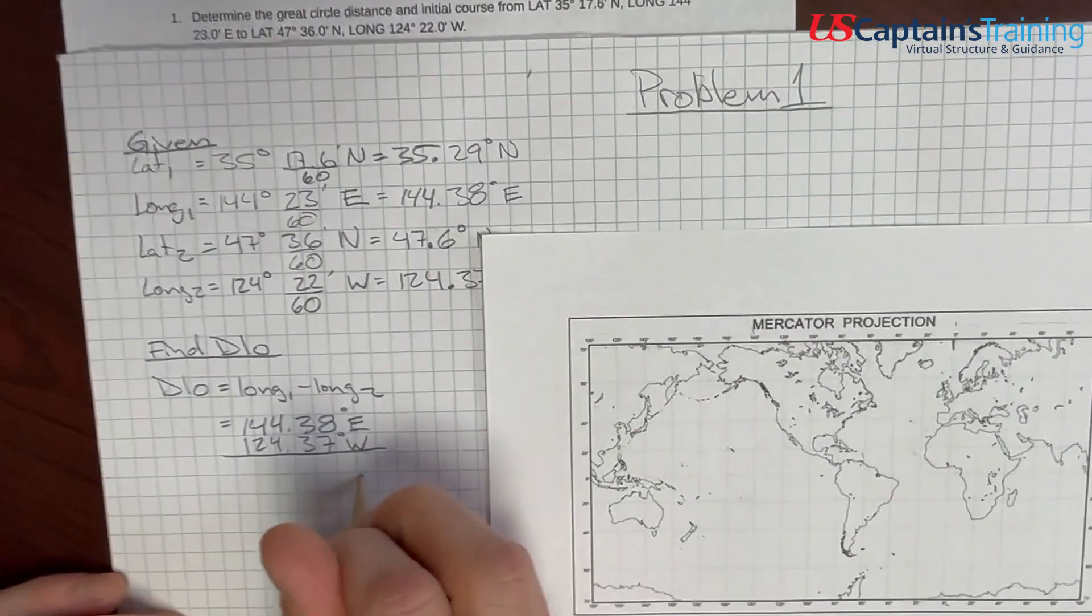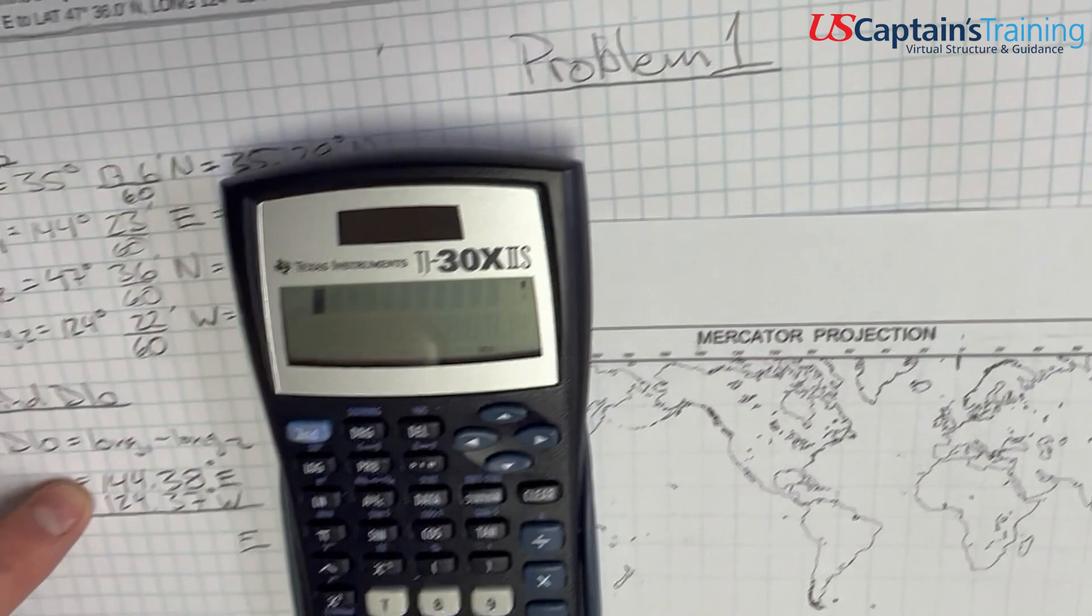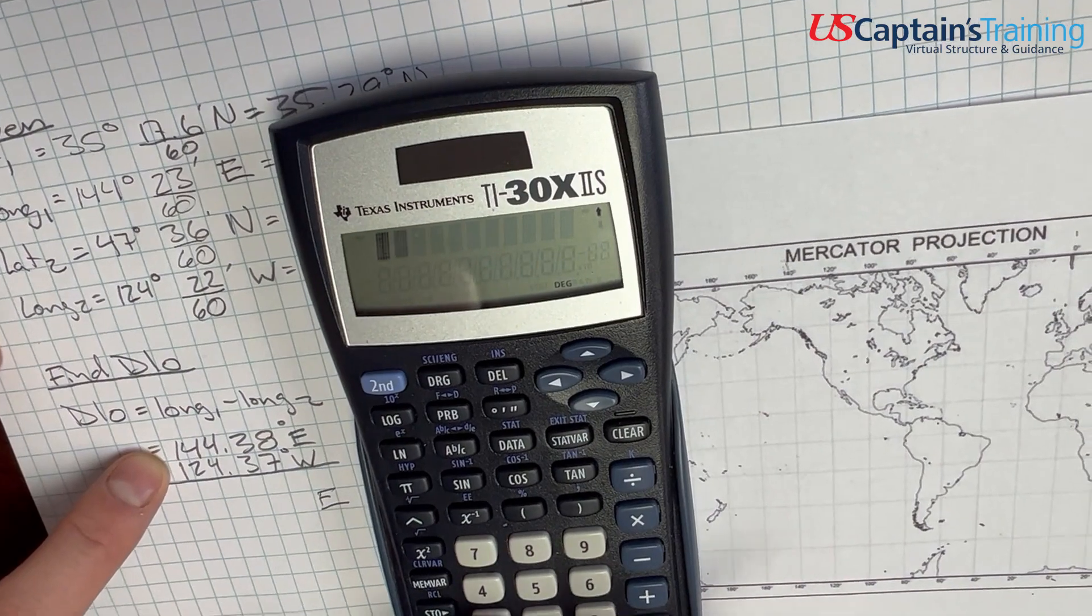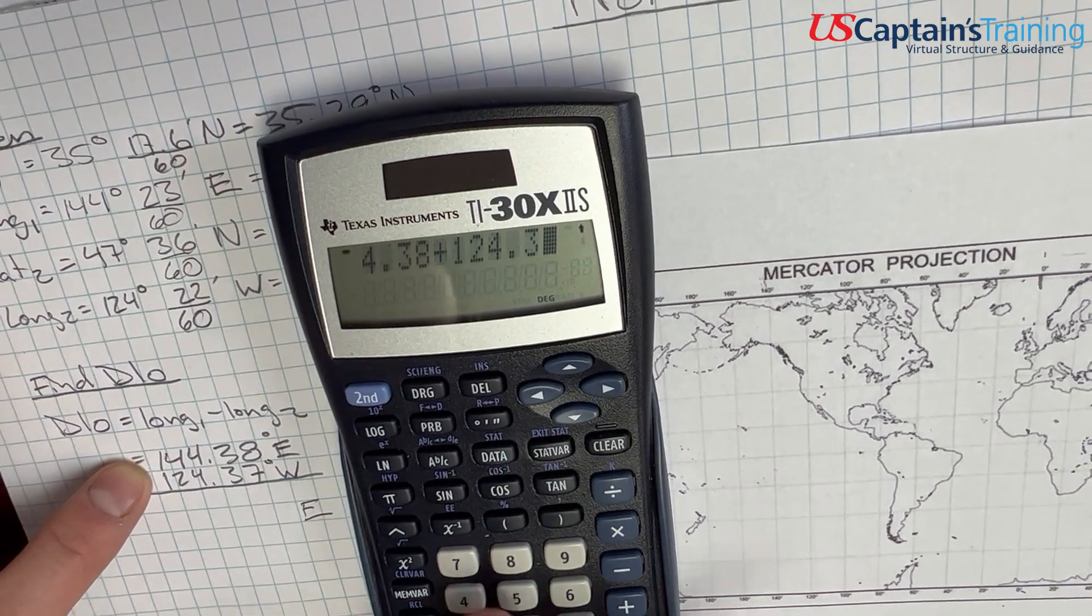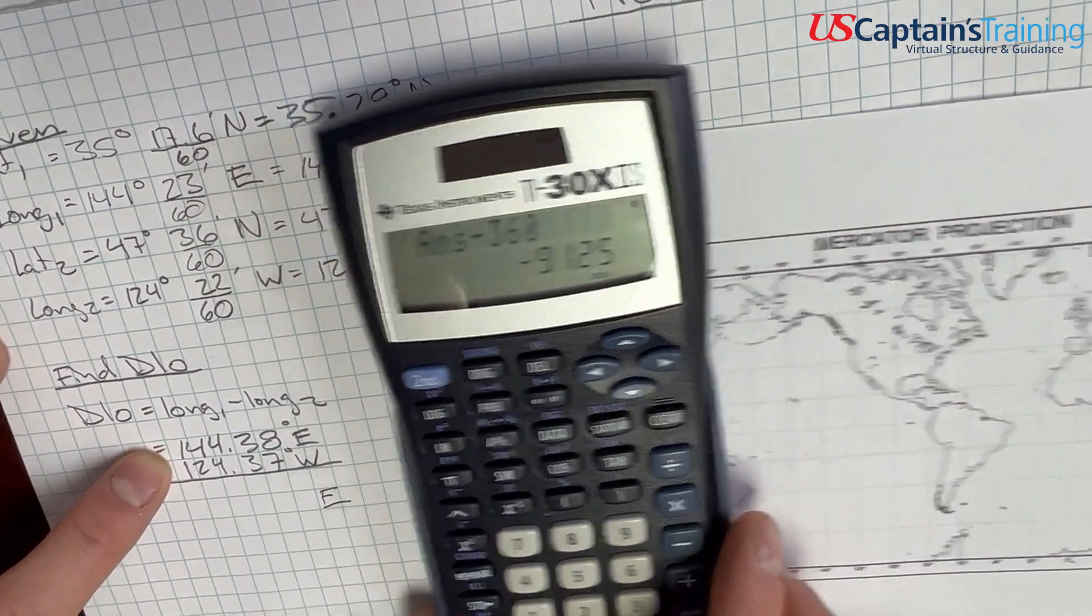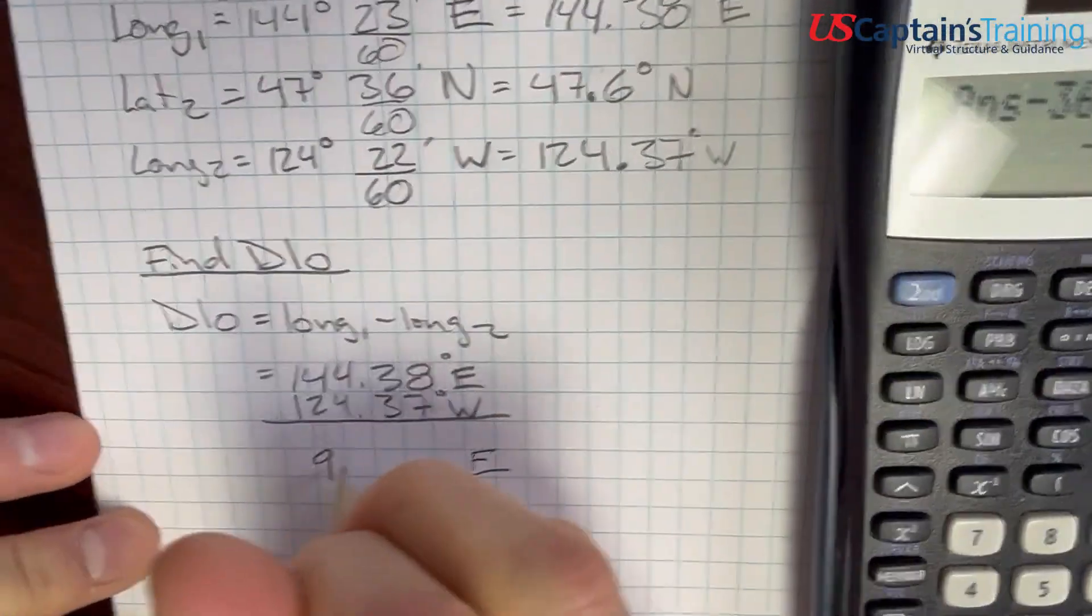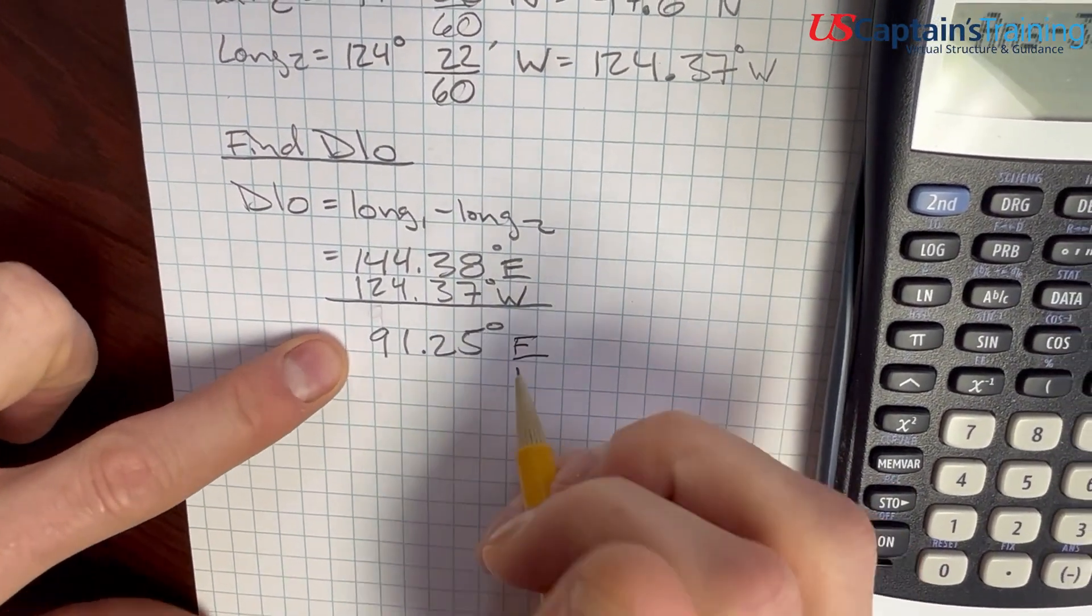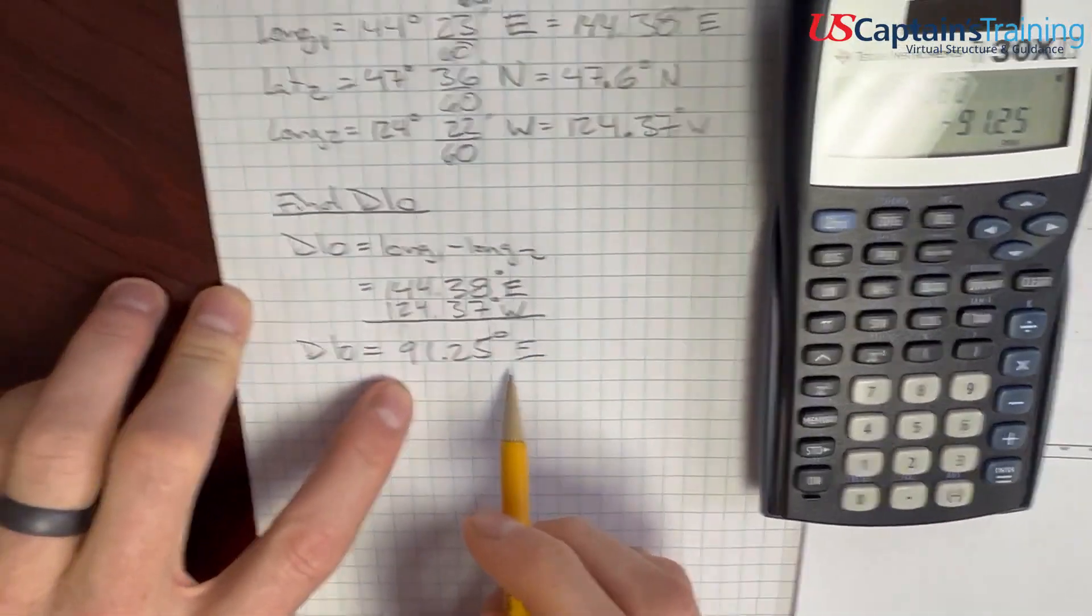So, let's just... We know we went to the east. We're going to name this thing east. And, here we go. So, we're going to add these together, subtract them from 360 to get our difference. That's 144.38 plus 124.37 minus 360 equals 91.25 degrees east. That is our D low. D low equals 91.25 east. Good.